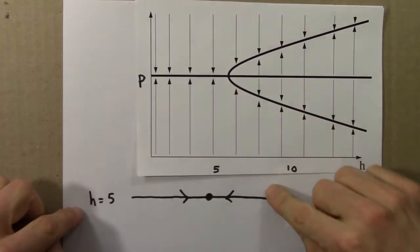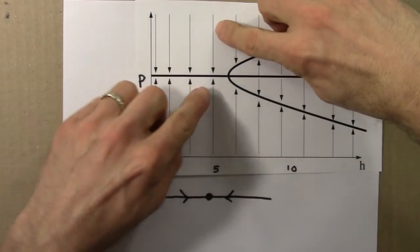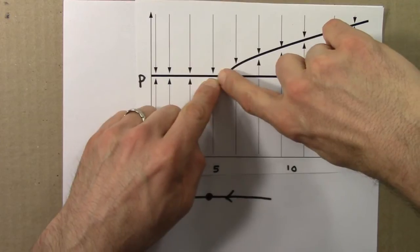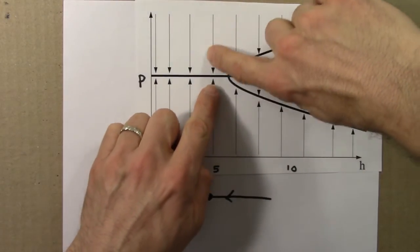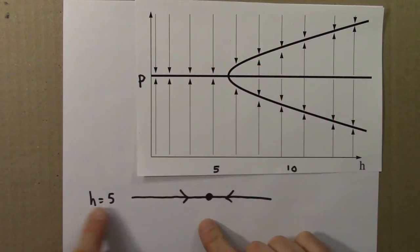At h equals 5, there is a single fixed point. That's the solid line, and it's stable because the arrows are pushing towards it.